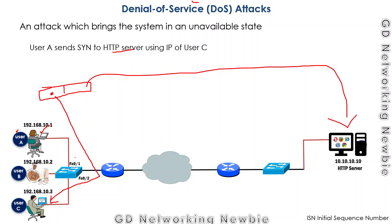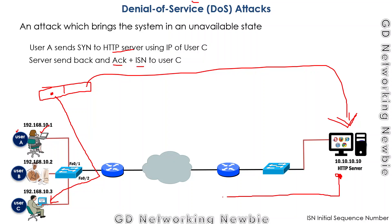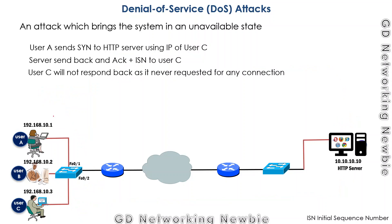When the server receives that packet, it sends back an acknowledgement plus an initial sequence number — but this time it sends that response to user C, because it assumes the request came from user C. However, user C will not respond, because it never requested any connection.